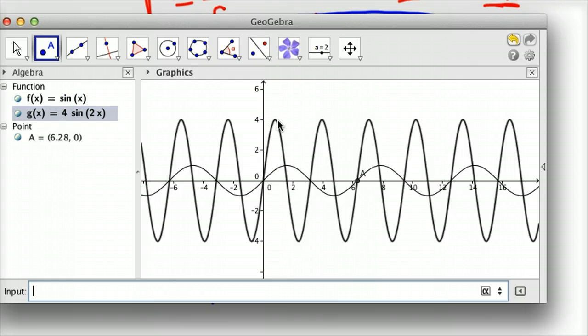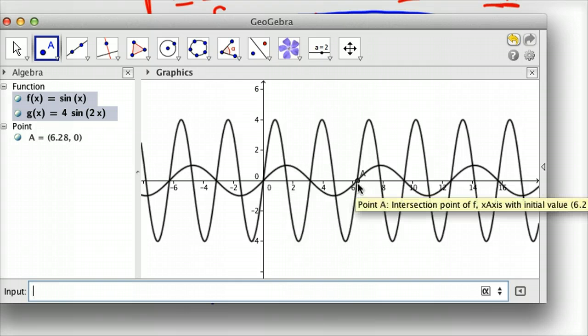But notice it goes up to 4, down, there's pi, not pi, sorry, there's pi right there. And down to negative 4, up to pi, up again to 4, down again, and then up again to 2 pi.